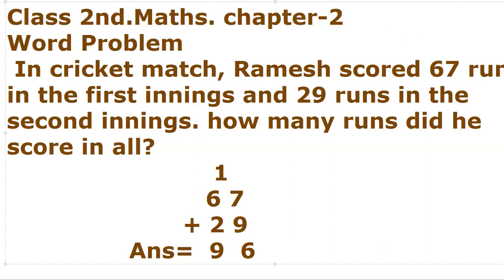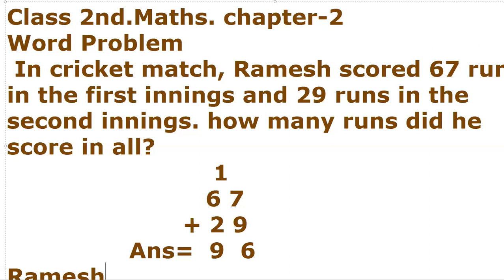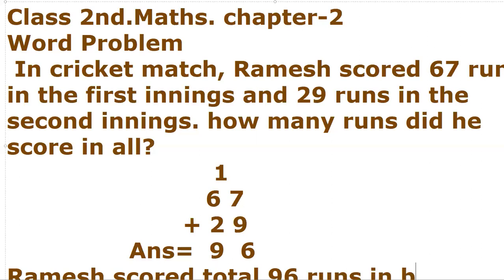Now write the answer line: Ramir scored a total of 96 runs in both innings. Here, the first word problem is completed.